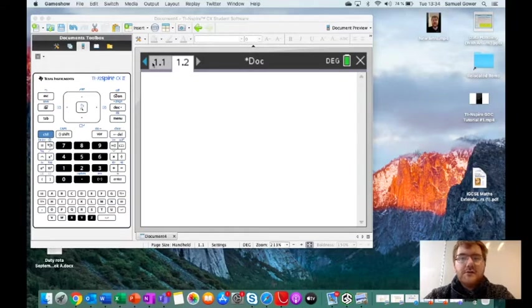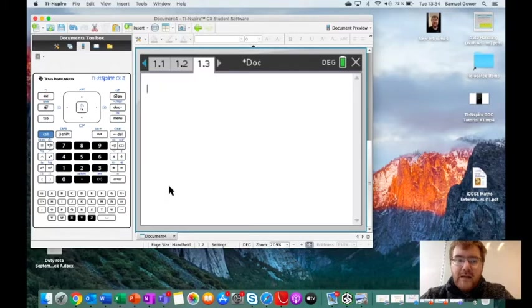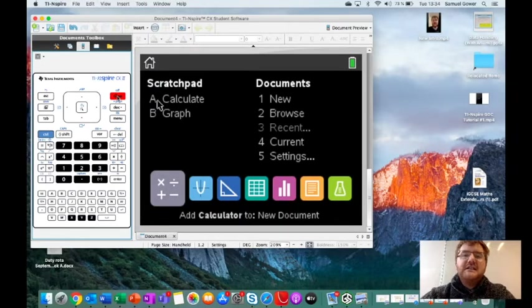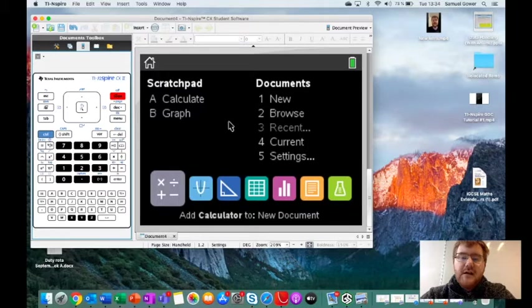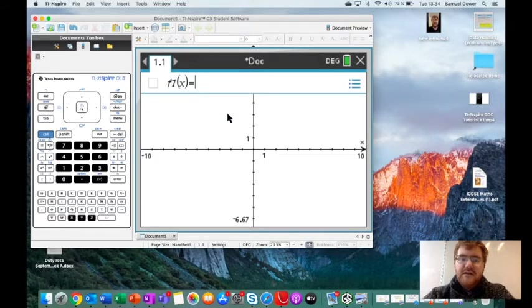It's definitely not something to be scared of, so please do like and subscribe. Last time we looked at the calculator function and pressing various buttons. What we're going to look at, and this is probably the most useful function on the GDC itself, is to actually look at some graphs. You can press this button here or you can press New and then go to Add Graphs.